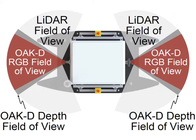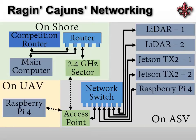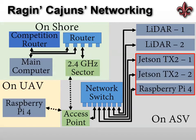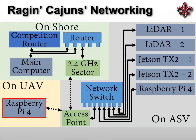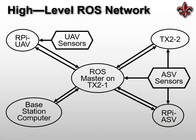This is the Raging Cajuns networking diagram for the competition. Depicted are all the computers connected to this network. There are two Jetson TX2s and one Raspberry Pi 4 on the ASV. All computers on the ASV are wired connections to save bandwidth for the newly integrated UAV. This is important because the UAV is a mobile sensor for the ASV and will be sending collected data back to it. There is one Raspberry Pi 4 on the UAV, and the UAV connects to this network via the access point on the ASV. All of the computers are running the Robot Operating System, or ROS. ROS is the core of our system, used for everything from low-level control of the thrusters to calculating coordinate transformations during the competition for mapping and localization. Here is a high-level overview of our ROS network.